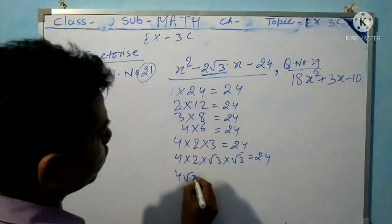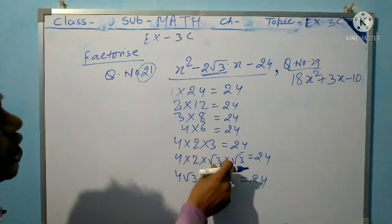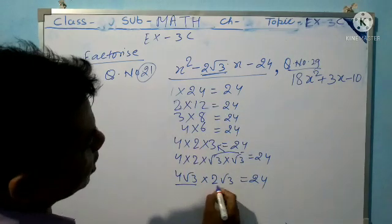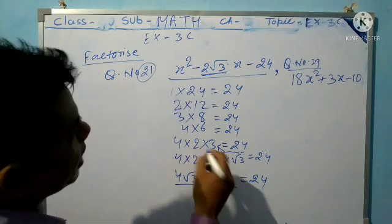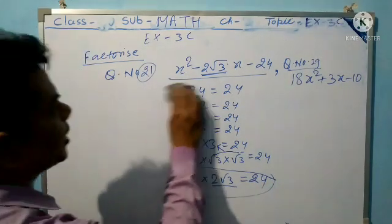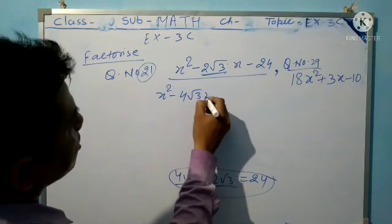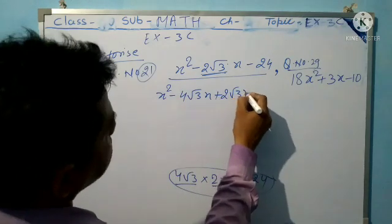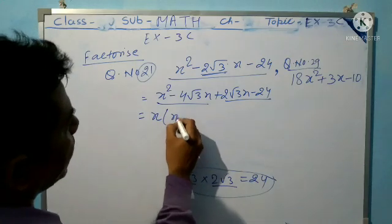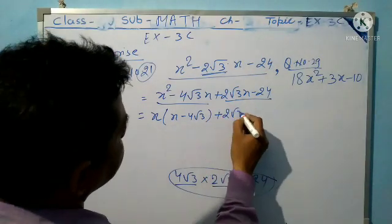So 4√3 and 2√3 equals 24, because √3 times √3 equals 3. Now 4√3 minus 2√3 equals 2√3, which is the middle term. So the value is 4√3, and we write x² - 4√3x + 2√3x.